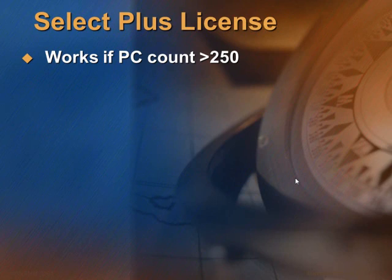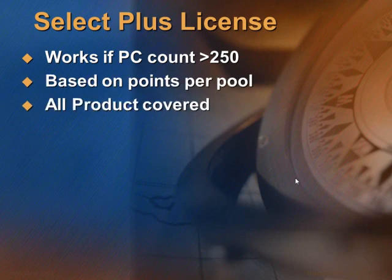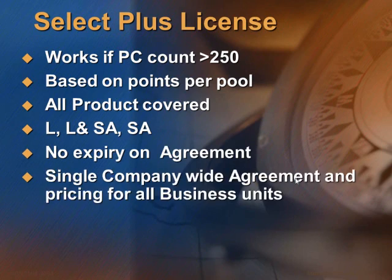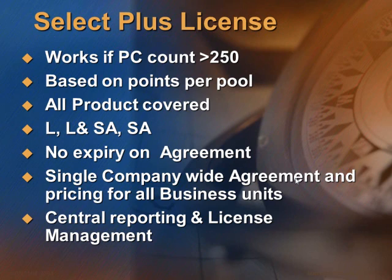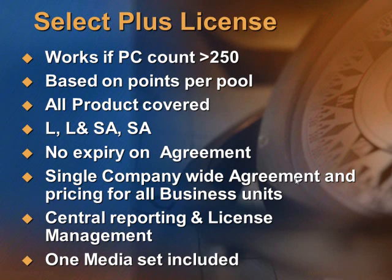Now let's look at Select Plus. This is valid if the PC count in a company is more than 250. Some of the features are: it's a single company-wide purchasing agreement and pricing for all business units, there is central reporting, Software Assurance and license management, there is no agreement expiry, discounting on company-wide purchase volumes with zero forecasting, and there is a single company ID using which you can manage and view all assets across the company. Although Software Assurance is available, it is not mandatory in Select Plus. And one set of media is included.